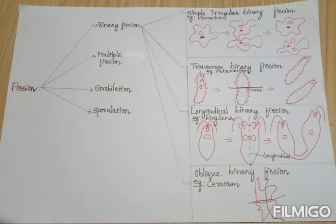In binary fission, karyokinesis and cytokinesis take place. Karyokinesis is the division of the nucleus. Cytokinesis is the division of the cytoplasm. In binary fission, the parent body divides into two halves, and each half has the capacity to develop into a new individual.